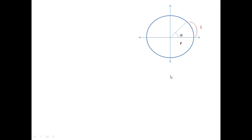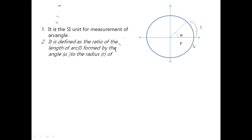Then what is radian? Radian is the SI unit for measurement of an angle and we defined it as the ratio of the length of the arc formed by this angle α to the radius of the circle.